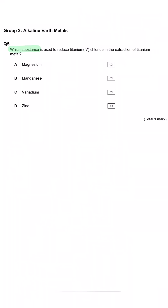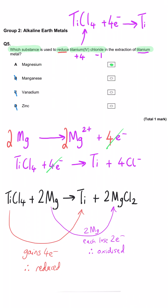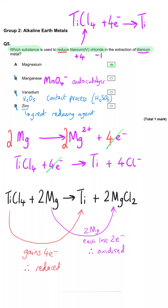Which substance is used to reduce titanium tetrachloride, TiCl4, in the extraction of titanium metal? Titanium is in a +4 oxidation state and it's going to gain electrons and become titanium metal. The element that does this is magnesium — we need two magnesium atoms, each giving away two electrons and becoming +2 oxidation state, while titanium gains four electrons total. TiCl4 + 2Mg → Ti + 2MgCl2, so A is the correct answer.